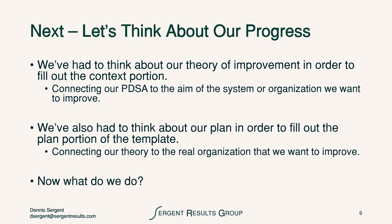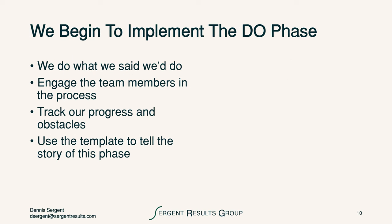Let's think about our progress. We've had to think about our theory of improvement in order to fill out the context, which connects our PDSA to the aim of the system. We've also had to think about our plan in order to fill out the plan portion of the template. So now we begin to implement the do phase. We do what we said we'd do, engage the team members in the process, track our progress and the obstacles, and use the template to tell the story of this phase.